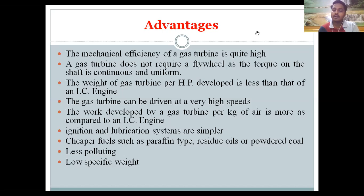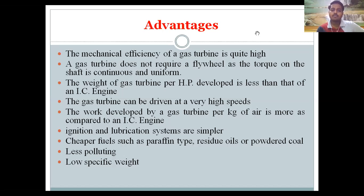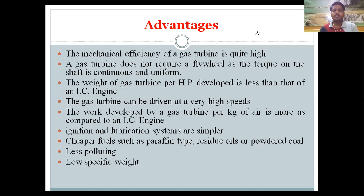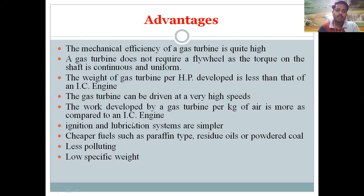A gas turbine can be driven at a very high speed — approximately 40,000 RPM — whereas this is not possible in an IC engine. The work developed by a gas turbine per kg of air is more compared to an IC engine. Components of a gas turbine can be made lighter. The ignition and lubricant systems are much simpler, and cheaper fuels such as paraffin, residual oil, and powdered coal can be used. There is also low specific weight and less pollution.